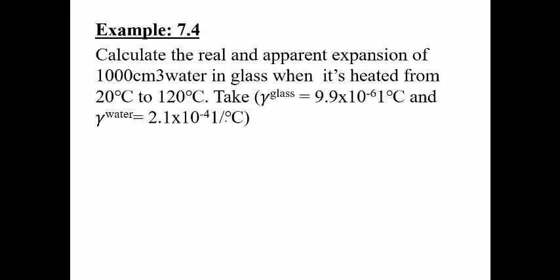Let us take one example. We are asked to calculate the real and apparent expansion of a liquid — that is, water. If you have 1000 cm³ of water in a glass container, and it is heated from 20°C to 120°C, where 20°C is T_cold and 120°C is T_hot, and gamma of glass and gamma of water are given. Let us take out the given: ΔT becomes 100 because 120 minus 20 is 100.